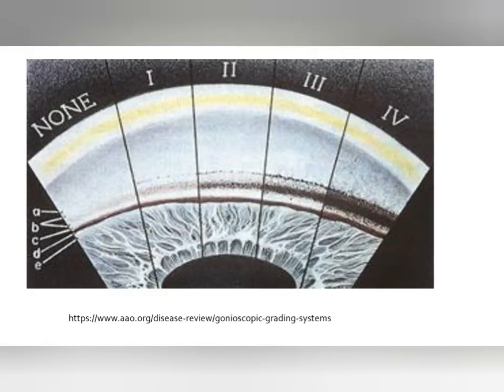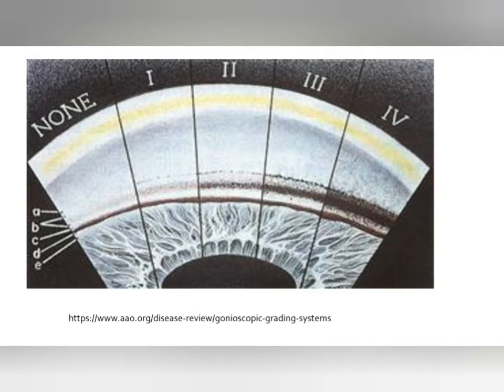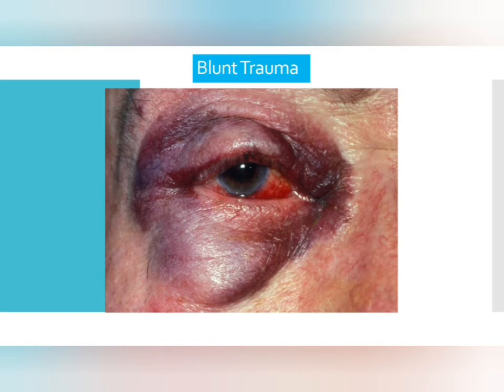The Scheie grading system is used for documentation of pigmentation. Grade 0 has no pigmentation. As pigmentation increases, it goes from grade 1 to 4. In grade 4, you cannot see anything — not Schwalbe's line, not the anterior or posterior trabecular meshwork — only pigmentation. This indicates pigment dispersion syndrome and the person may progress to pigmentary glaucoma in the future.